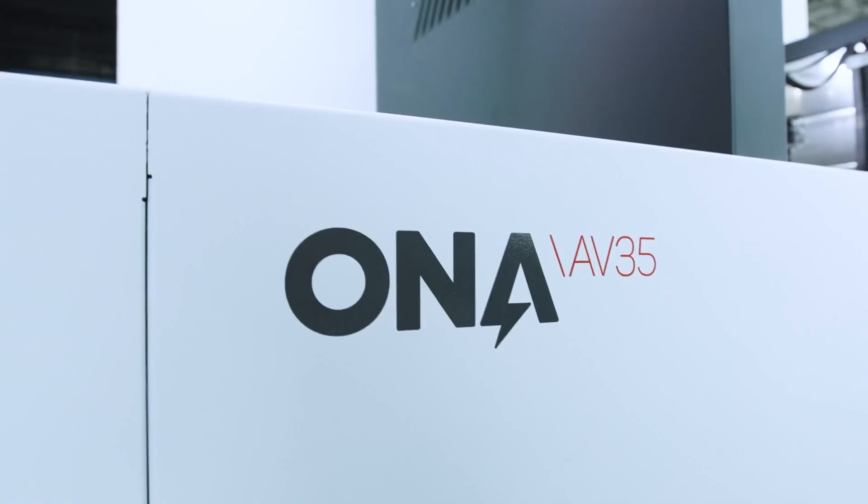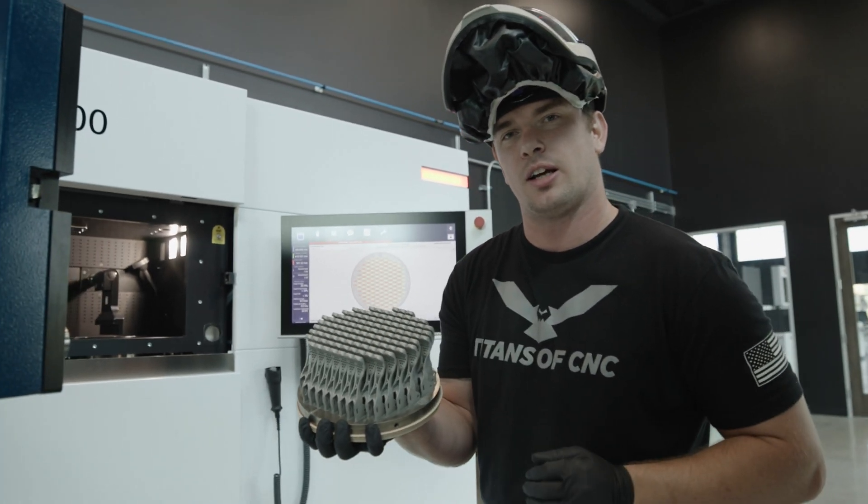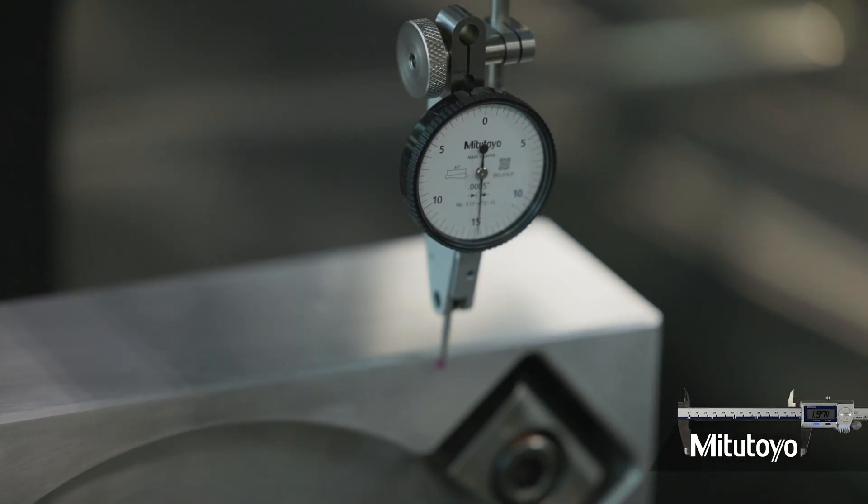We still need to take this over to the Ona AV35 wire EDM and cut all 112 of these brake levers off our build plate. Let's head over to the EDM department and get it done.